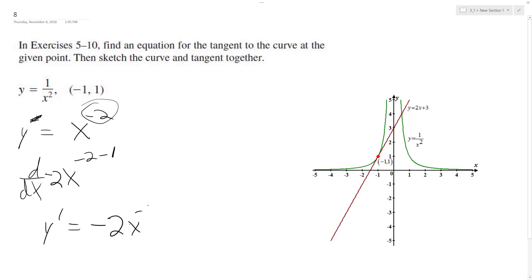Plug in our negative 1 for x, so we get negative 2 times negative 1 raised to the negative 3. So it's still going to be negative... So this ends up being a positive. So it ends up being negative 2 over a negative 1, which is 2.